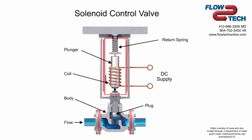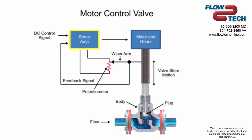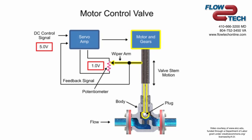Another method for variable valve positioning uses a motor and is referred to as proportional control mode. Using a gear motor attached to the valve stem, a servo amplifier provides a DC control signal that moves the valve to the desired position. Feedback is achieved with a wiper arm attached to the valve stem that sends a signal back to the servo amplifier where the position is monitored. The servo amplifier drives the motor until the control signal is equal to the feedback signal.